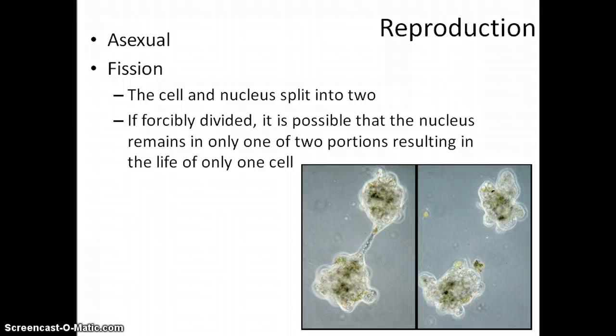Amoebas reproduce asexually by a process called fission, not to be confused with binary fission of bacteria. The cell and the nucleus simply split into two different cells, and if they are forcibly divided by, say, an environmental cause, it's possible that the nucleus remains in only one of the two new portions, resulting in the life of one cell and the death of the other.